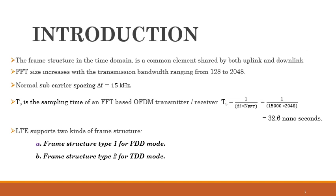The frame structure is a common element which is shared by both uplink and downlink. Here, we are using a subcarrier spacing of delta F equal to 15 kilohertz. Apart from this, we can also use a subcarrier spacing of 7.5 kilohertz, which is used for multicast broadcast single frequency network.